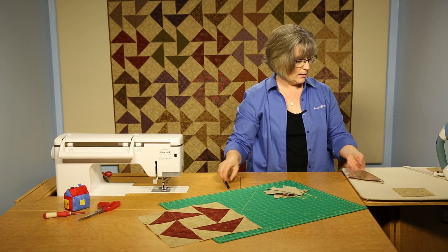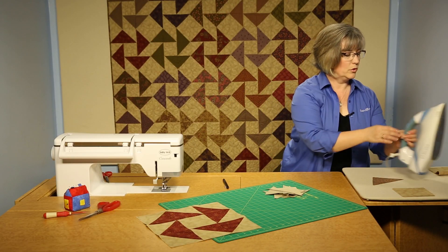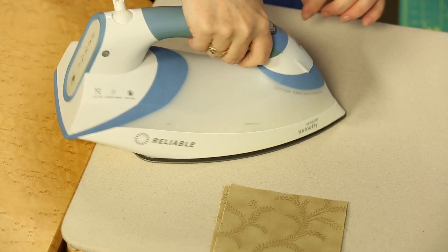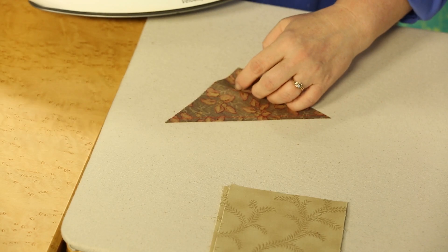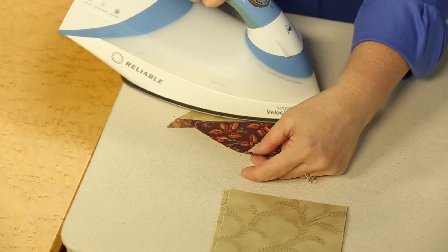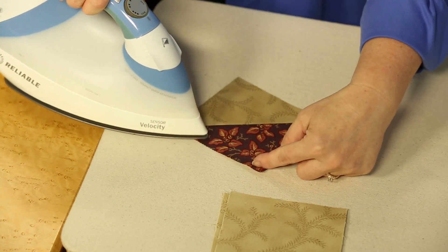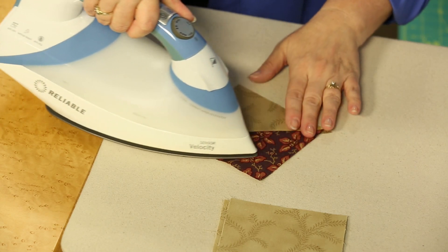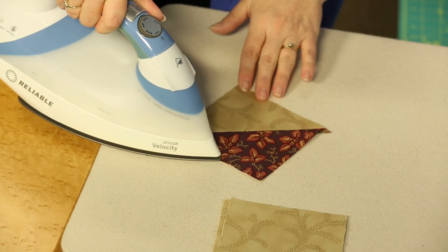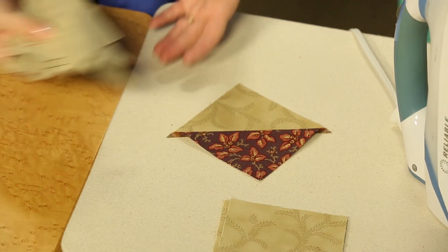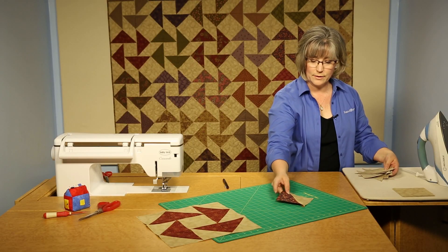You're going to heat set, we always do, and set that seam. Get it warm, and then you're going to open out and make sure that you are opening all the way open, all the way to the seam. You will do that down through all of the pieces that you have just cut into triangle squares. So you'll have eight like this.